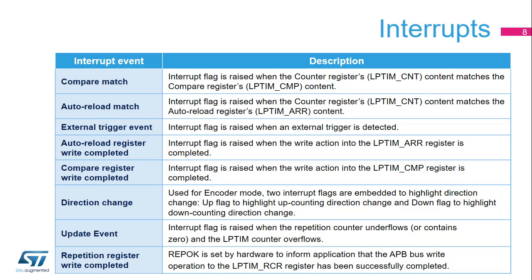The low-power timer peripheral features nine interrupt sources. The compare-match interrupt is raised once the content of the counter register LP-TIM-CNT matches or is greater than the compare register LP-TIM-CMP content. The auto-reload match interrupt is raised when the counter register's content matches the auto-reload register's content. The external-trigger event interrupt is raised when a valid external trigger is detected. The auto-reload register write completed, compare register write completed, and repetition register write completed interrupts are raised when the transfer of LP-TIM-ARR, LP-TIM-CMP, and LP-TIM-RCR content, respectively, is completed from the peripheral's APB interface logic into the peripheral's core logic, which are contained in two different clock domains.